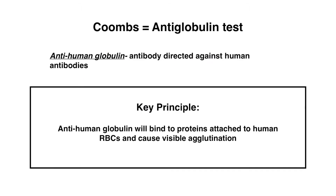The Coombs test is also known as the anti-globulin test, specifically the anti-human globulin, which is an antibody directed against human antibodies. Whether you're talking about the direct or the indirect Coombs test, the key principle behind both is this: anti-human globulin will bind to proteins attached to human red blood cells and cause visible agglutination. We'll be going over this principle in detail.